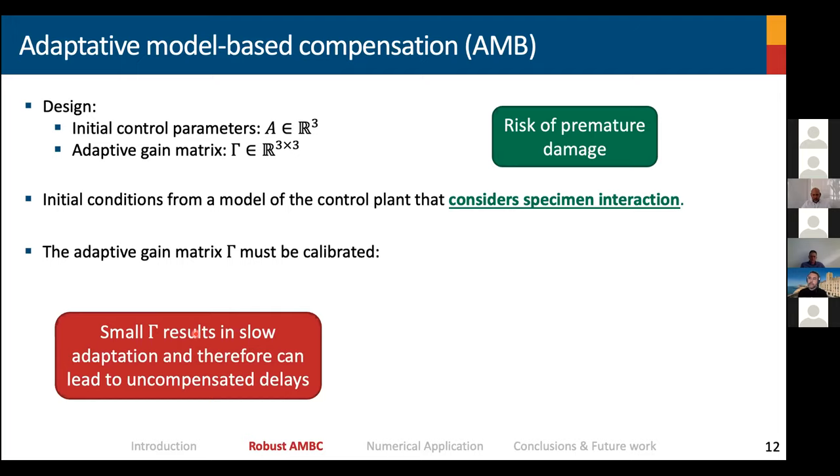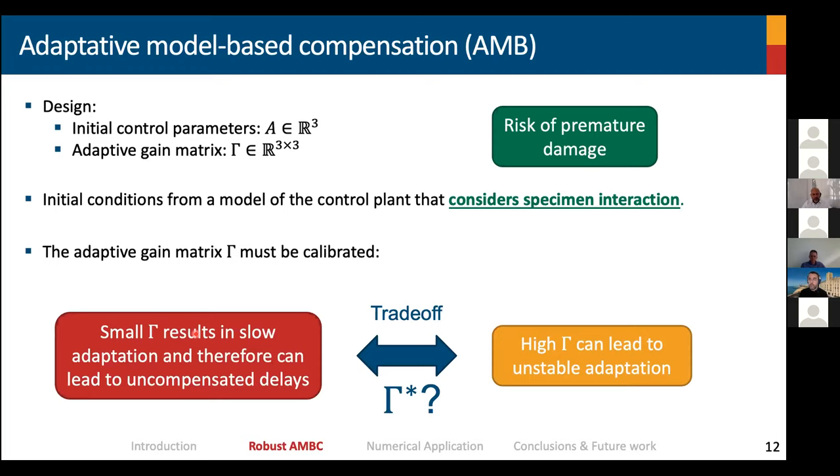If we choose a very small value of gamma, this will result in slow adaptation and therefore can lead to uncompensated delays. So basically, the compensator is not working. On the other hand, if we choose very high values of gamma, it is certain that the parameters are going to diverge and this could lead to unstable adaptation. The question that arises is where do we find our best value of adaptive gains gamma? That is something that we call gamma asterisk or gamma optimal.